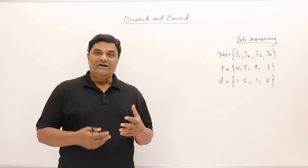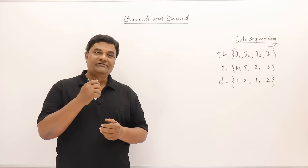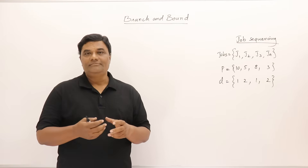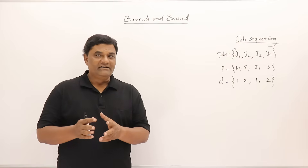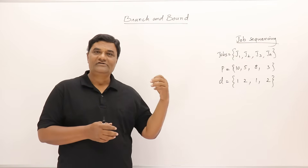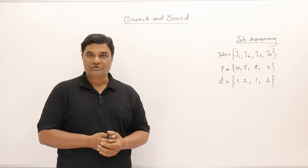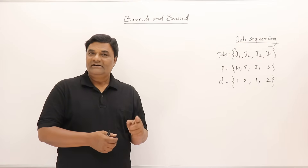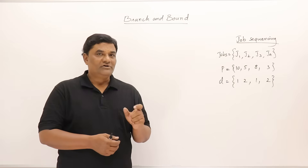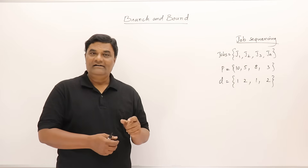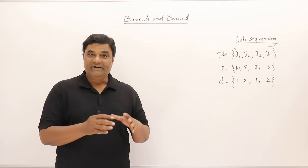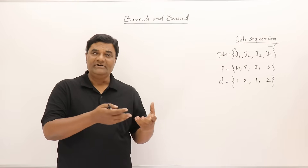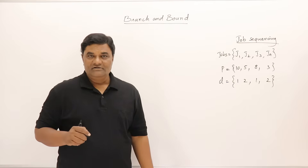The topic is branch and bound, one more problem solving strategy — a method by which we can solve a problem. This is similar to backtracking in the sense that it also uses a state space tree for solving the problem. However, it is useful for solving optimization problems, specifically minimization problems, not maximization. We can convert a maximization problem into a minimization one and then solve it.